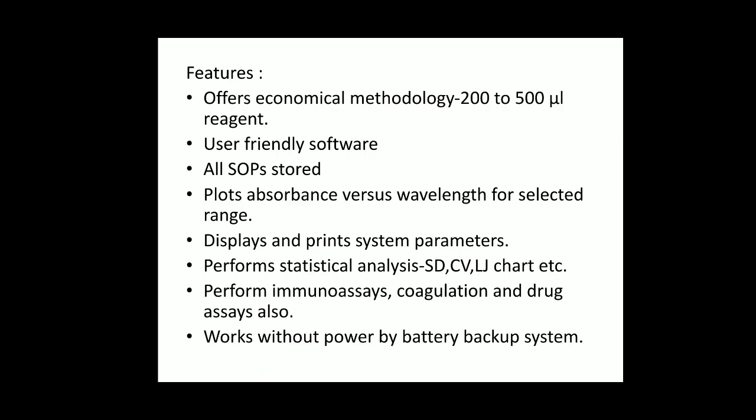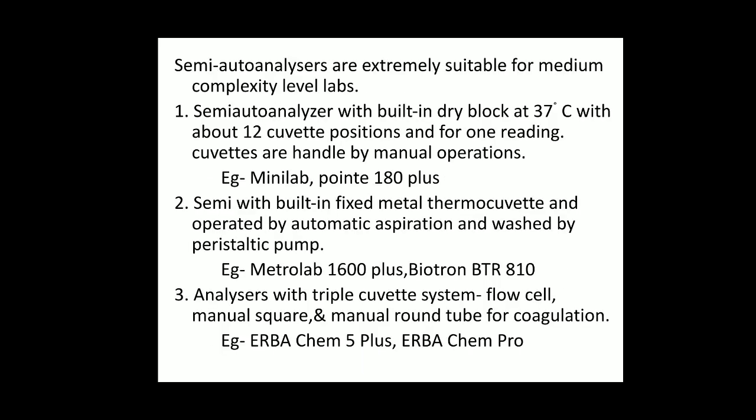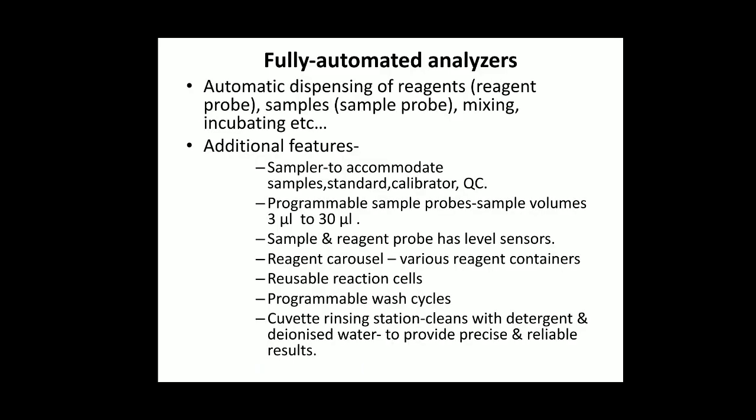The semi auto analyzer operates with a battery backup system also. Types of semi auto analyzers: one type has an incubator at 37 degrees Celsius with 12 cuvette positions — examples are Mini Lab and Point A 180 Plus. Another type has a metal thermo-cuvette with automatic aspiration — examples include Metro Lab 1600 Plus and Biotron BTR 810. With a triple-cuvette system — which has a flow cell, manual square, and round tube for coagulation — examples are Erba Chem Plus, Erba Chem Pro.